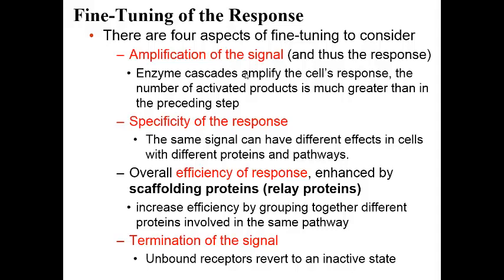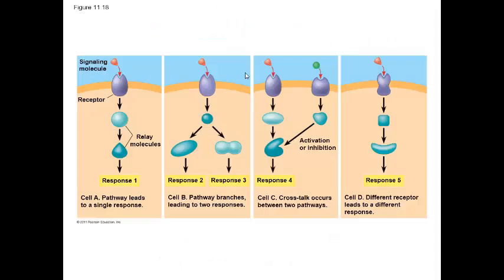Cells have the ability to fine-tune a response through four actions: amplification of the signal, specificity of the response, efficiency of the response, and termination of the signal. Regarding specificity, these pathways all utilize the same receptors but lead to different responses because they have different transduction pathways associated with the receptor. Whether a cell has a receptor dictates whether it can respond to the ligand, but the pathway within the cell dictates the specific response.